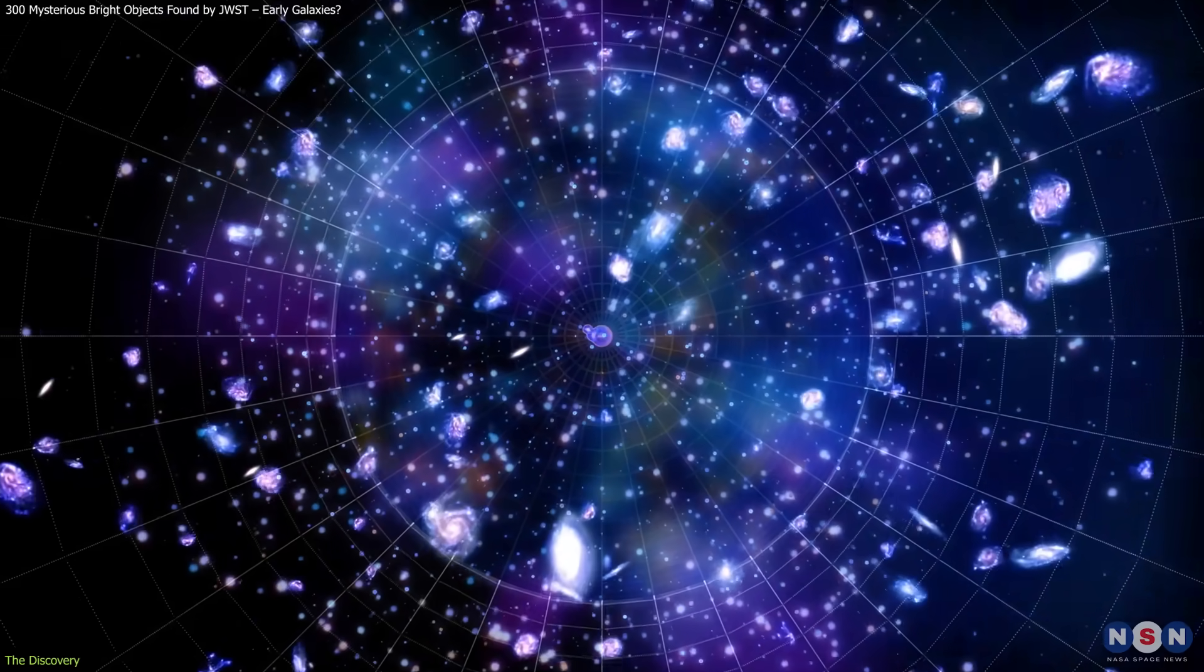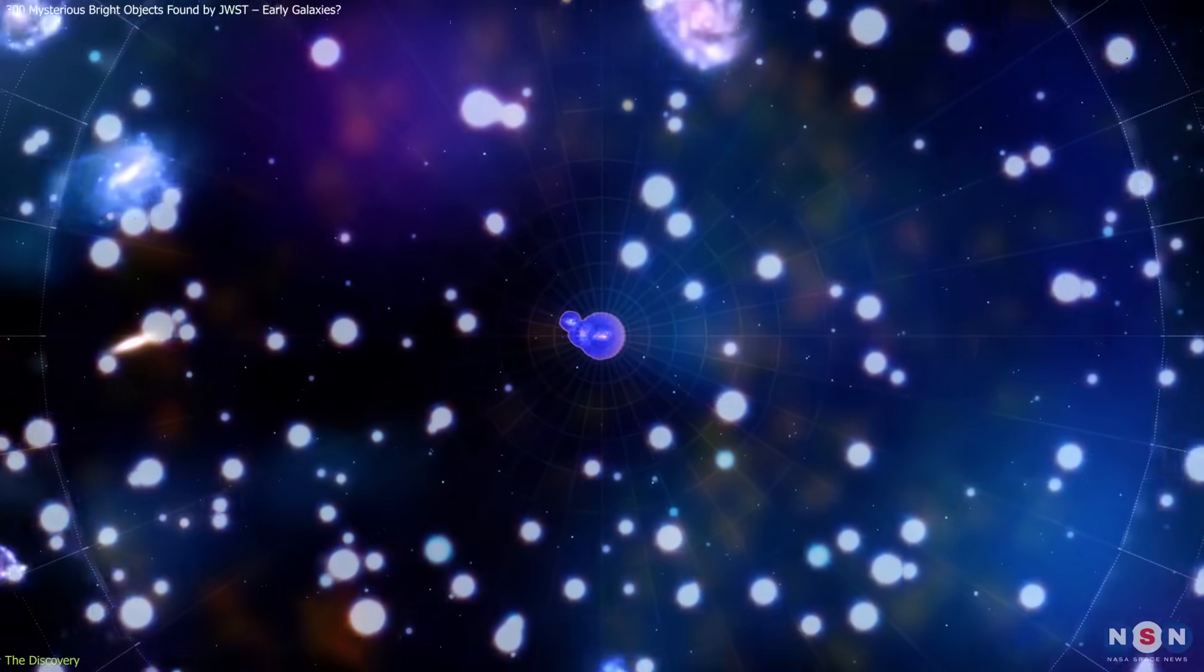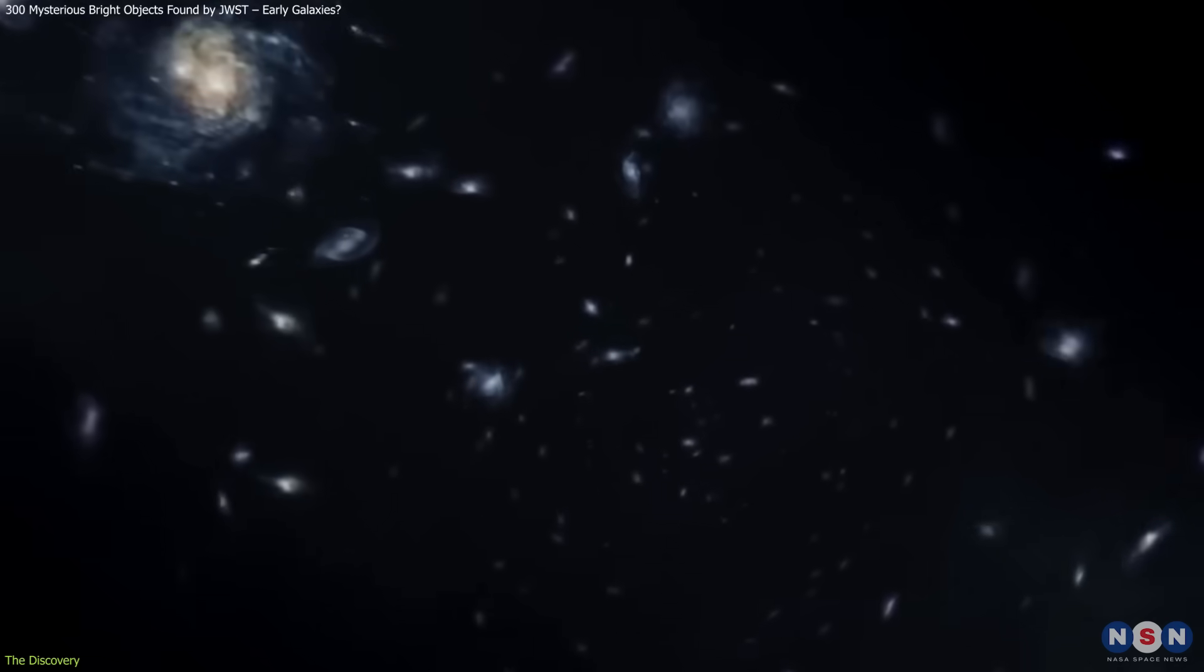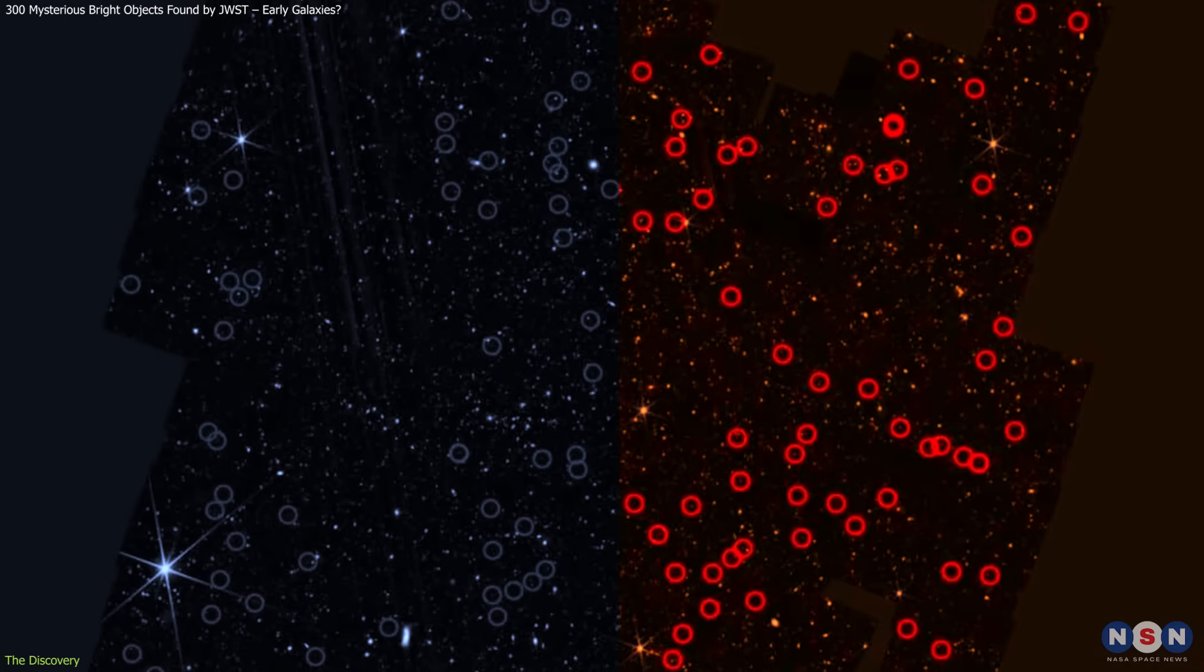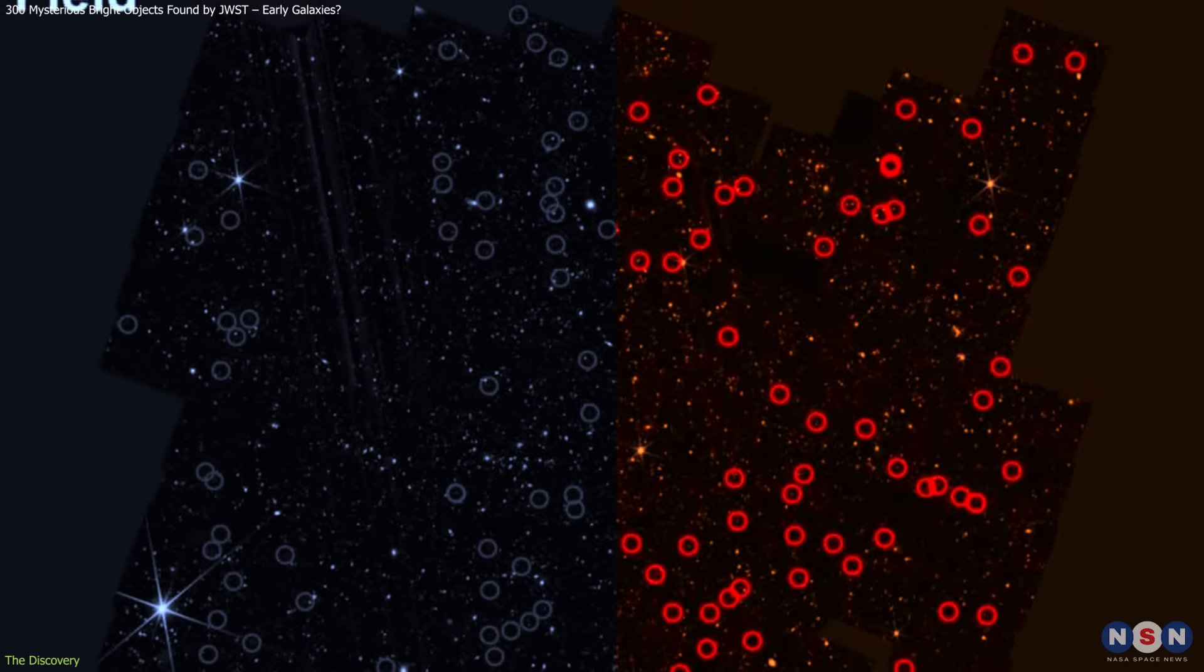Higher redshifts correspond to earlier points in cosmic history. To find their targets, the team employed the dropout technique, which looks for sources visible in redder filters but absent in bluer ones.